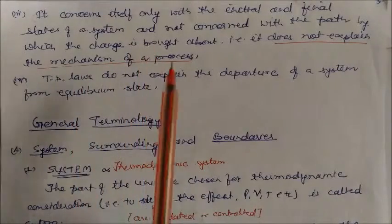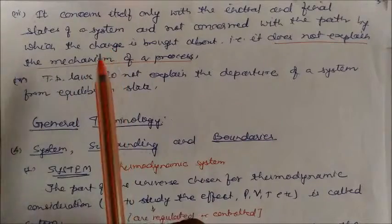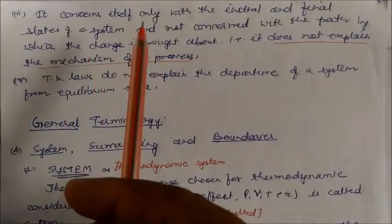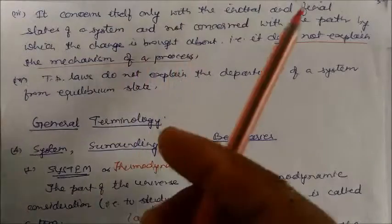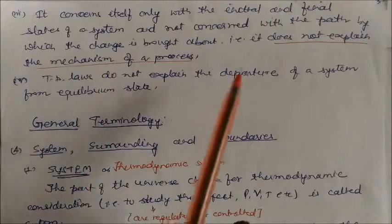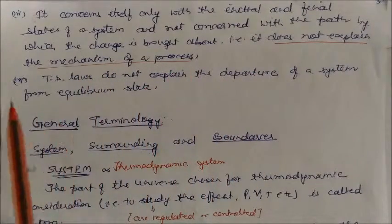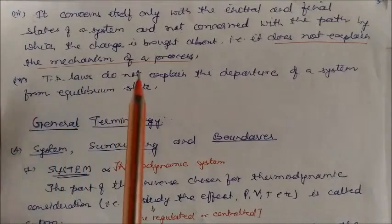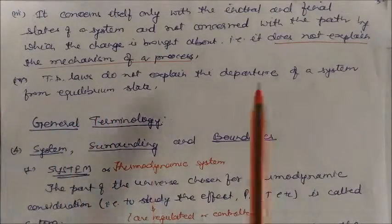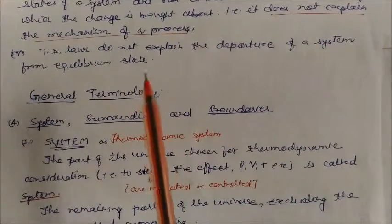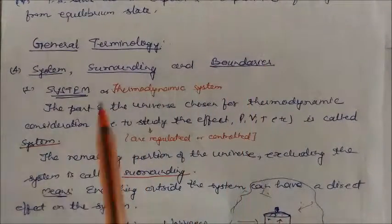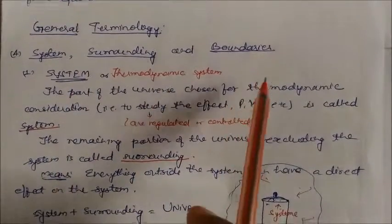Third limitation: thermodynamics concerns itself only with the initial and final states of a system, and is not concerned with the path by which the change is brought about. It only tells the energy change between initial and final states — it does not explain the mechanism of a process. Fourth, thermodynamic laws do not explain the departure of a system from its equilibrium state.